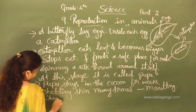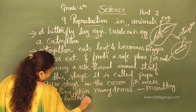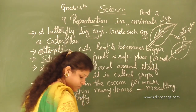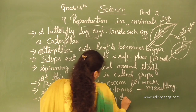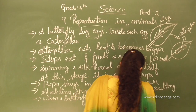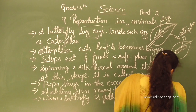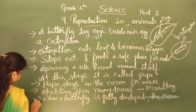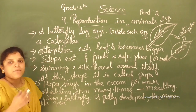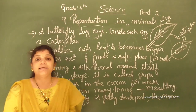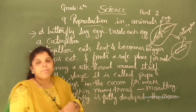When the butterfly is fully developed, the cocoon splits open and slowly the butterfly comes out. They dry their wings and fly away. This is the life cycle of a butterfly.